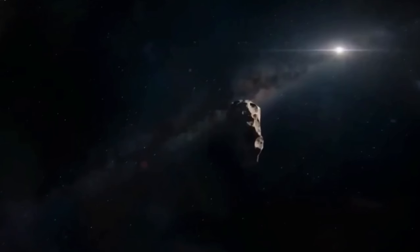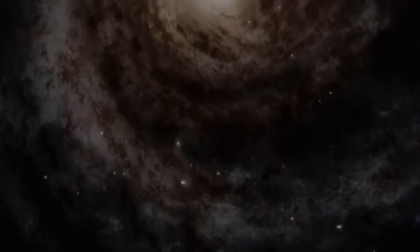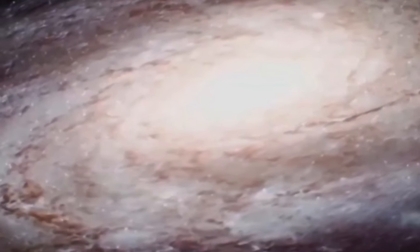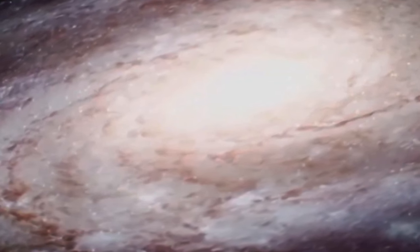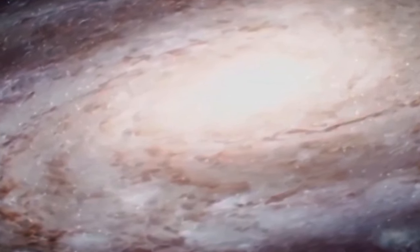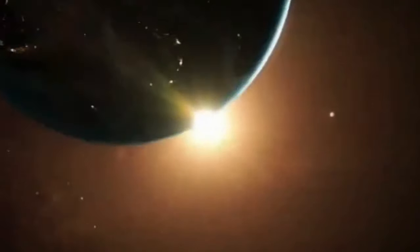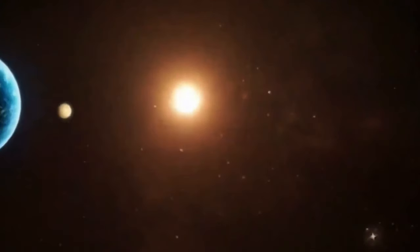Unlike typical comets bound to the Sun, 2I/Borisov boasts a heliocentric orbital eccentricity of 3.36, signifying its lack of allegiance to our solar system. It reached its closest proximity to the Sun, just over two astronomical units away, on December 8, 2019. In November, astronomers from Yale University revealed that its tail spanned 14 times the size of our planet. In March 2020, observations unveiled the comet's fragmentation.